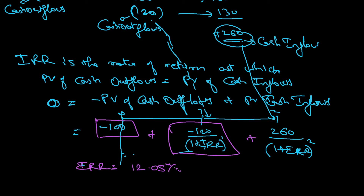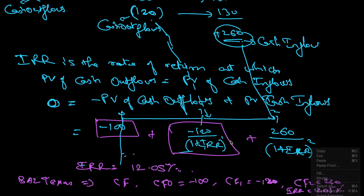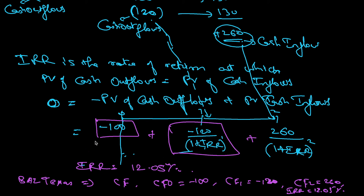You can also calculate this using the BA II Plus Texas calculator. Go to the cash flow function: CF0 = −100, CF1 = −120, CF2 = +260. Then compute IRR and you will get 12.05%.